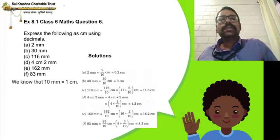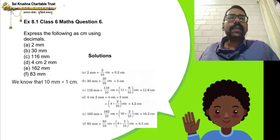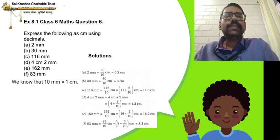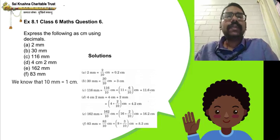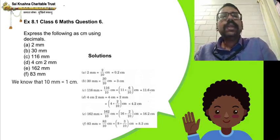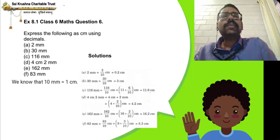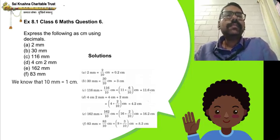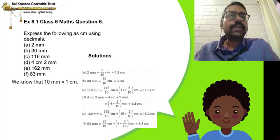Exercise 8.1, Classics Maths, question 6: Express the following as centimetres using decimals. So what is 1 centimetre? 10 millimetres is equal to 1 centimetre. When you are converting a smaller unit to a larger unit, you have to do division. When you are converting a larger unit to a smaller unit, you have to multiply. Which is the larger unit here? Centimetre is greater than millimetre. So 10 millimetres is 1 centimetre.